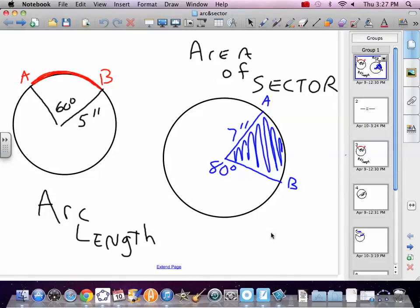The section that we're doing now is dealing with arc length and area of sector. We put them together because they're very similar. They're both dealing with parts of a circle.